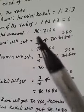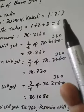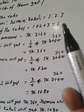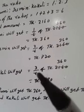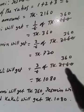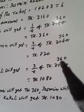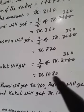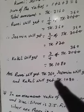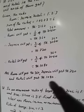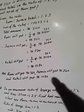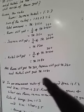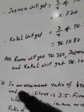Kakuli will get 3 by 6 part. 3 by 6 of taka 2160, 360 multiplied by 3 is 1080. Rumi will get 360, Jasmine will get 720, Kakuli will get 1080. Next question.